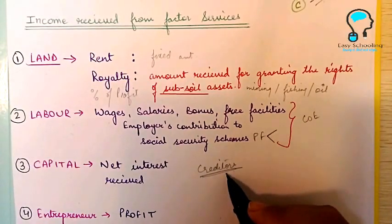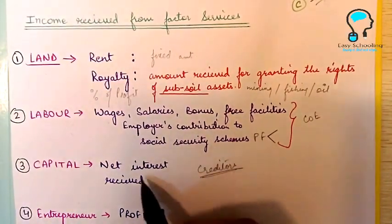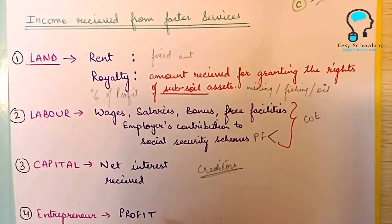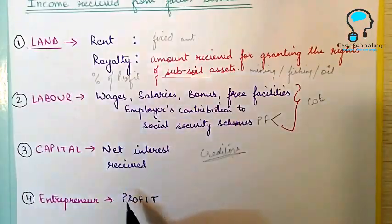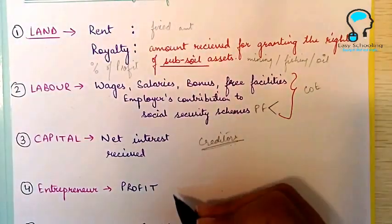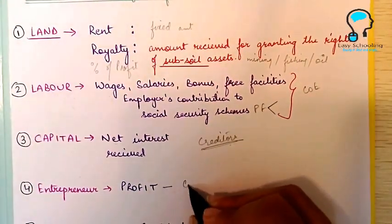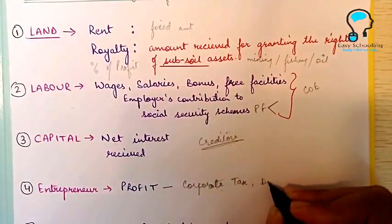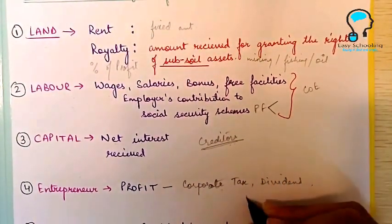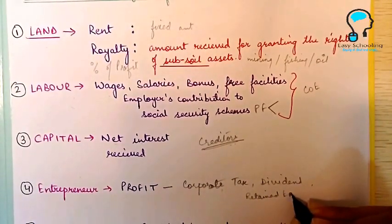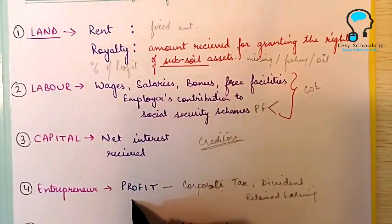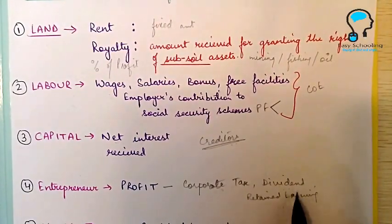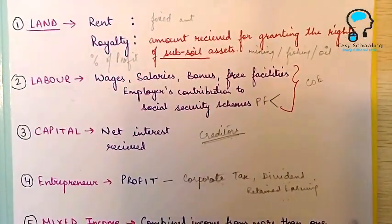When money is given by creditors to firms, in return the firms pay interest to the creditors. Net interest is interest received minus interest paid. The entrepreneur receives profit as remuneration, and this profit can be subdivided into three parts: corporate tax, dividend, and retained earnings. In a question, profit may be given directly, or these three elements may be given separately — if so, add all three to get the total profit.